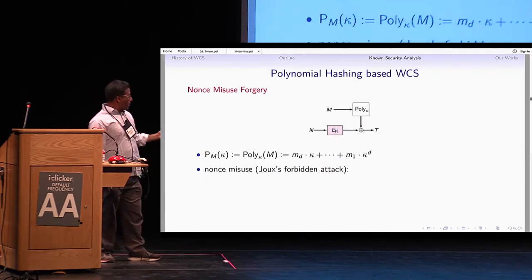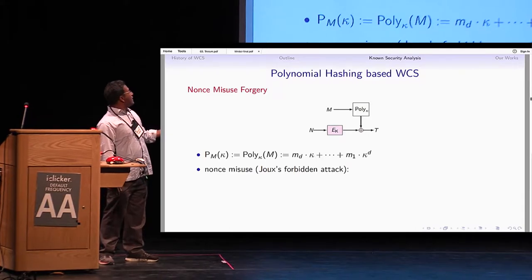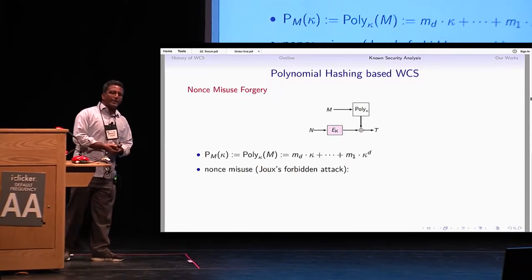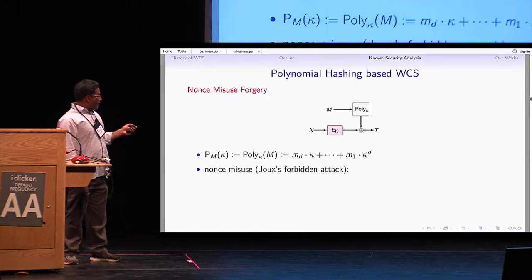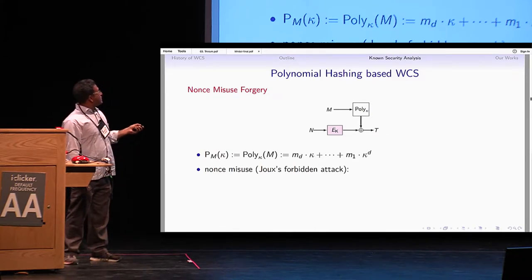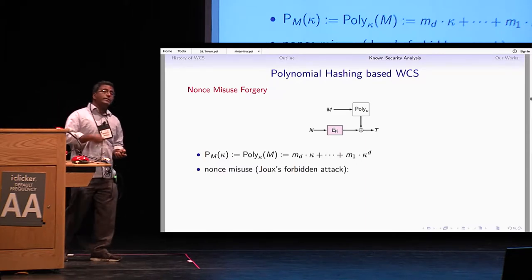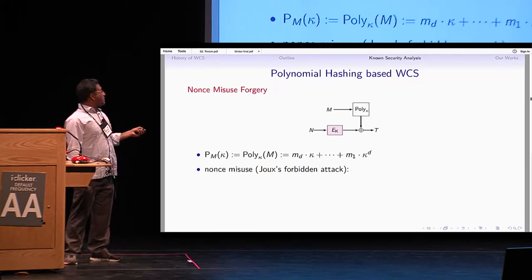Coming back to the Wegman-Carter-Shoup authenticator — WCS — we focus on the polynomial hash. You can consider any almost-XOR-universal hash function, but for simplicity consider the polynomial hash. However, when polynomial hashing is applied, attacks are known if the nonce is misused — specifically if the nonce is reused for two authentication computations. So this is a nonce-respecting scenario: you should not repeat nonces.